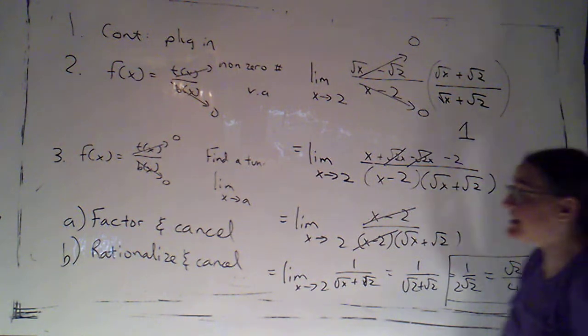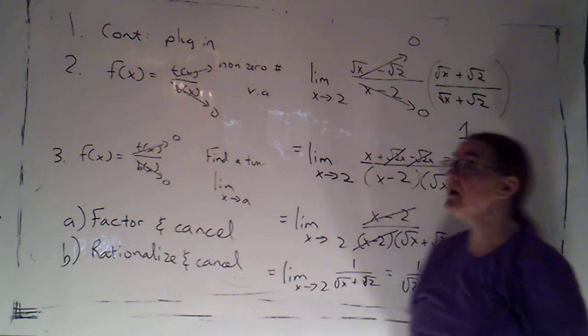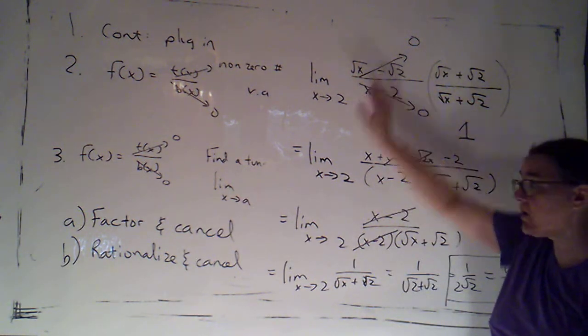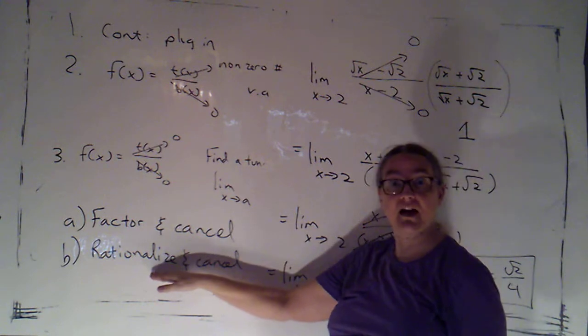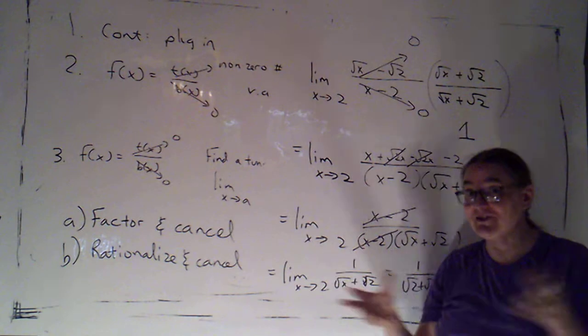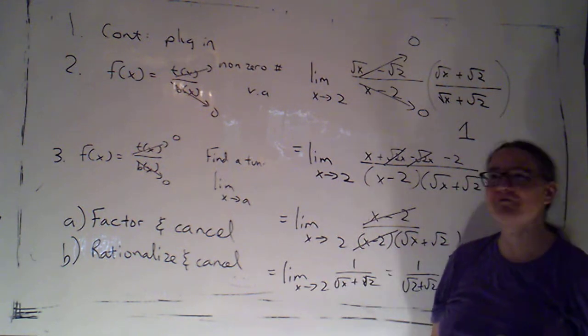So when I see polynomials, I'll try factoring and canceling. When I see things that involve roots that are going to 0, I usually will try to rationalize and cancel. Although sometimes you can do a factoring and cancel if you're willing to factor using factors that involve square roots.